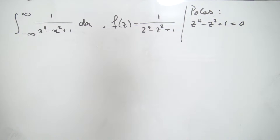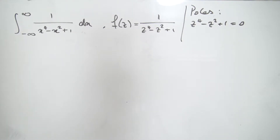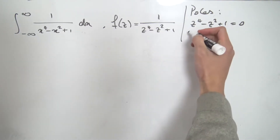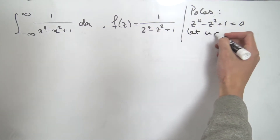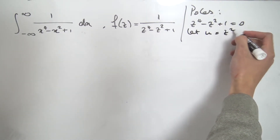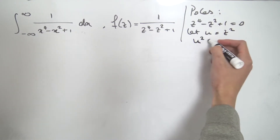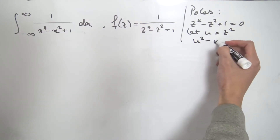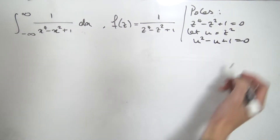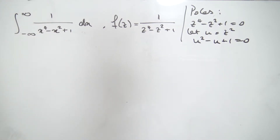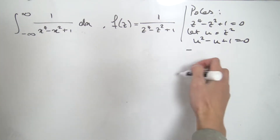It's a little hard to find the zeros of this quartic directly, but there's a nice substitution we can use to turn it into a quadratic. We let u equal z squared, and in doing so we get a quadratic in u: u squared minus u plus one equals zero.